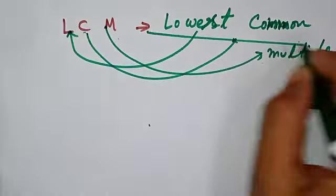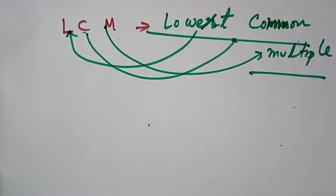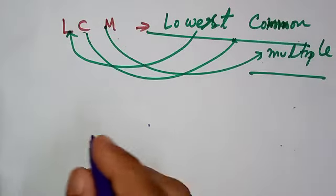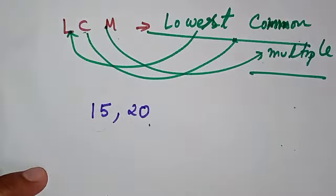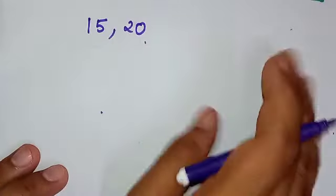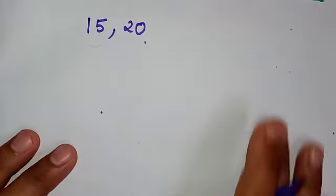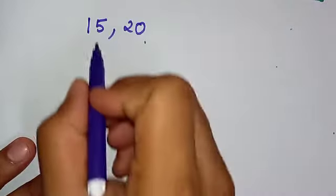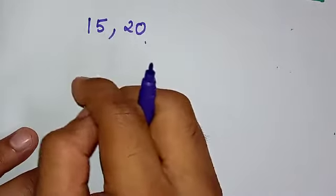Now what does this signify? If I say calculate the LCM of 15 and 20—you have learned two methods so far: the prime factorization method and the common division method. I myself prefer the common division method if no specifications have been made in the question, because this method is easier and precise.